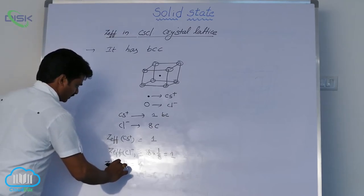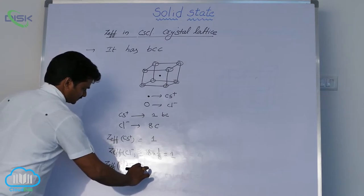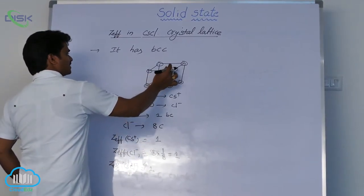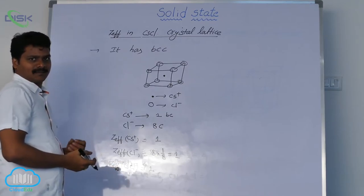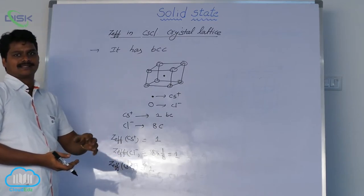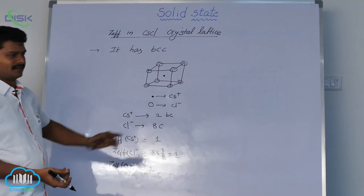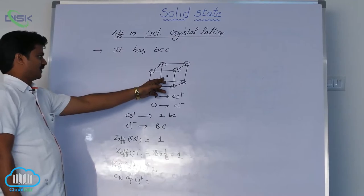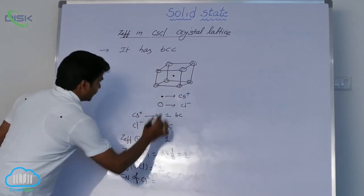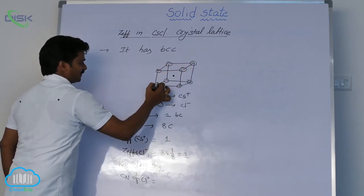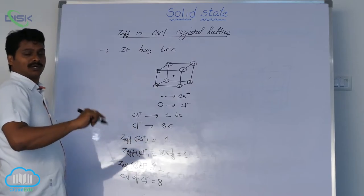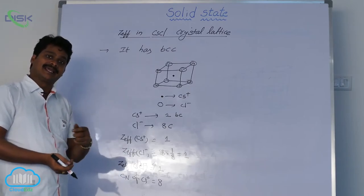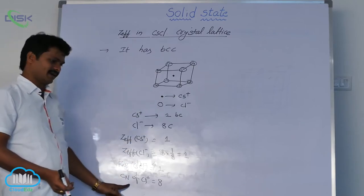In this structure, each cesium has how many nearest chloride ions? The number of nearest opposite ions is called the coordination number. What is the coordination number of cesium ion? Eight chloride ions - one, two, three, four, five, six, seven, eight. But in sodium chloride, each sodium ion is surrounded by six, whereas in cesium chloride it is eight.